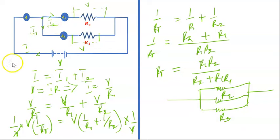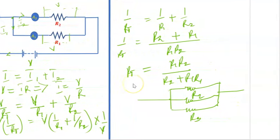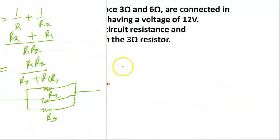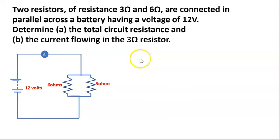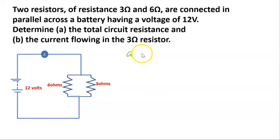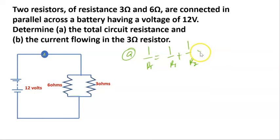Our first example is a two-resistor case connected in parallel. Two resistors of resistance 3 ohms and 6 ohms are connected in parallel across a battery having a voltage of 12 volts. Determine the total circuit resistance and the current flowing in the 3-ohm resistor. Since 12 volts is across both points, we have 12 volts across each resistor. For part (a), 1 over RT equals 1 over R1 plus 1 over R2, which is 1 over 6 plus 1 over 3.